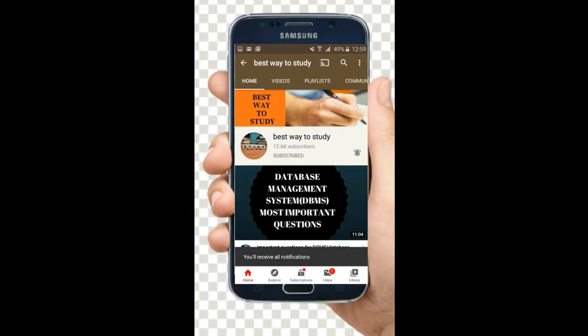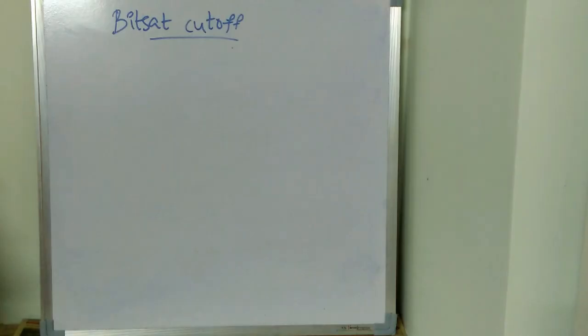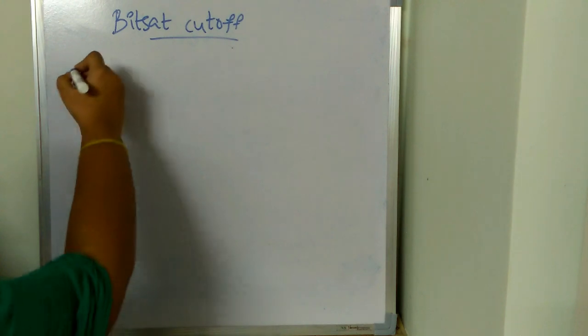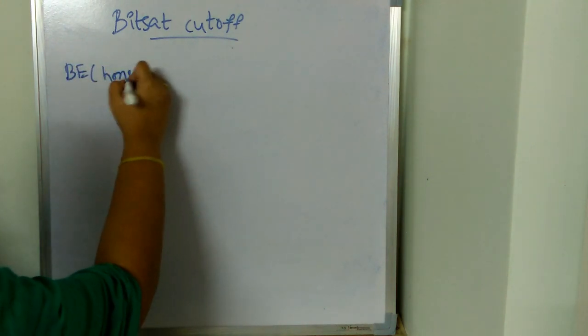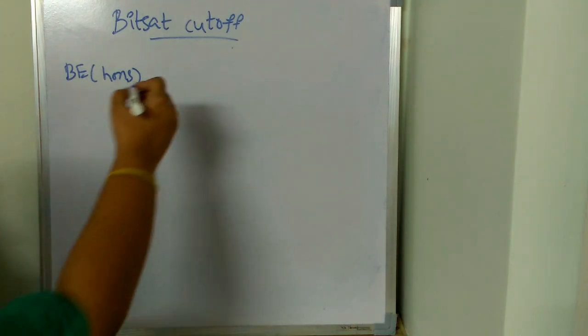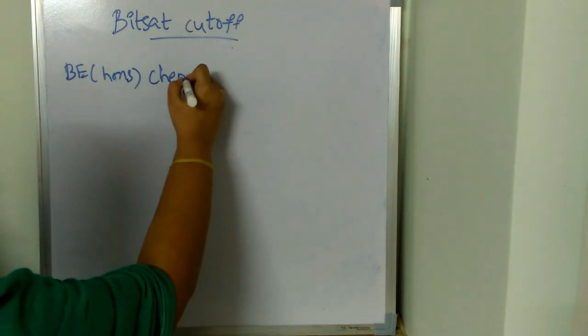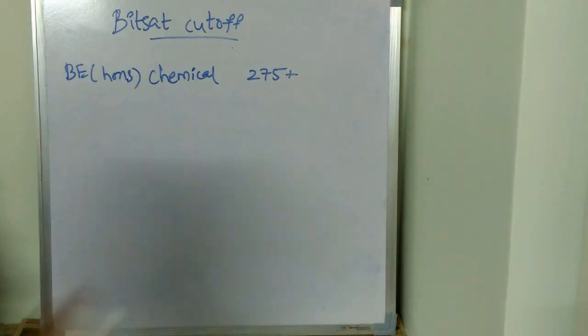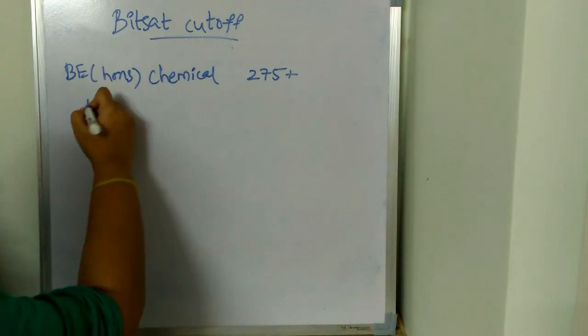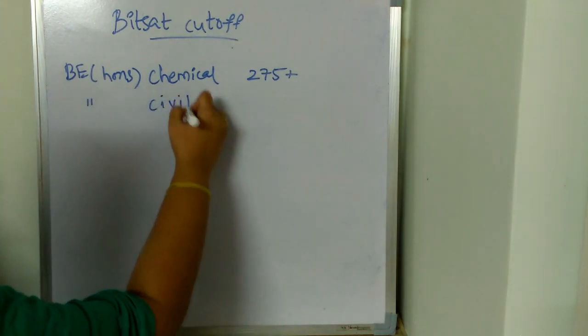Subscribe and hit the bell icon for more notifications. So coming to the cutoff for BE Honors Chemical, the cutoff is going to be 275 plus. For BE Honors Civil, BE Honors Civil cutoff is going to be above 270.